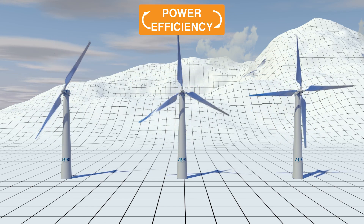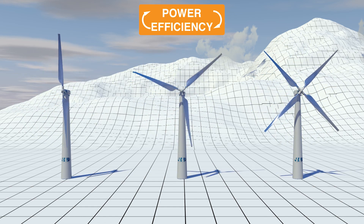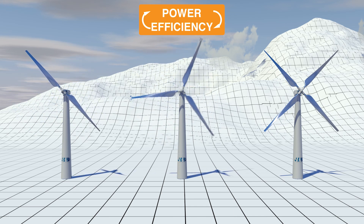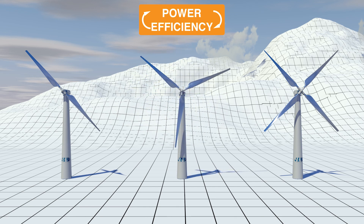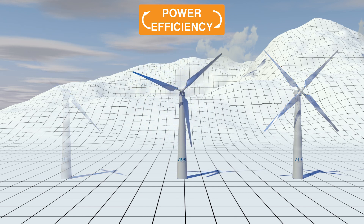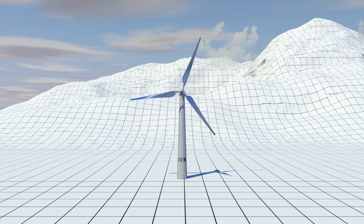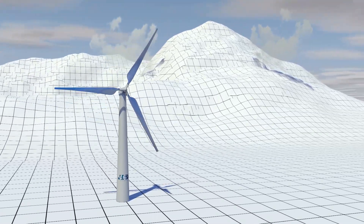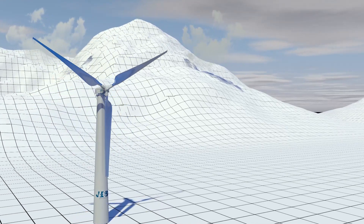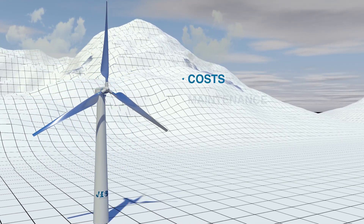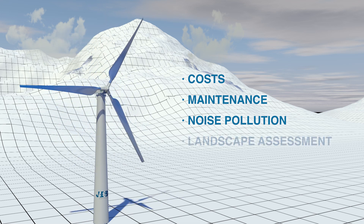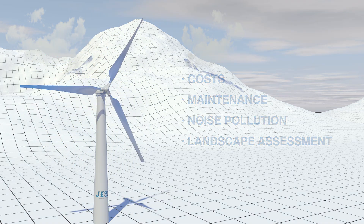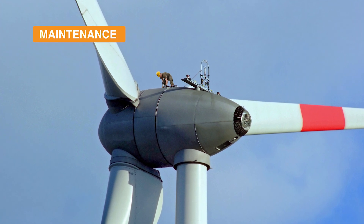A wind turbine with two blades will obtain similar performances but would require bigger dimensions and therefore higher costs. We have seen that the design and implementation of a wind turbine involves a series of structural choices that are not directly linked to the power of the wind turbine, but take into account factors such as costs, maintenance, noise pollution, landscape assessment, and many others. Maintenance still represents a fundamental element for the correct functioning of these devices.